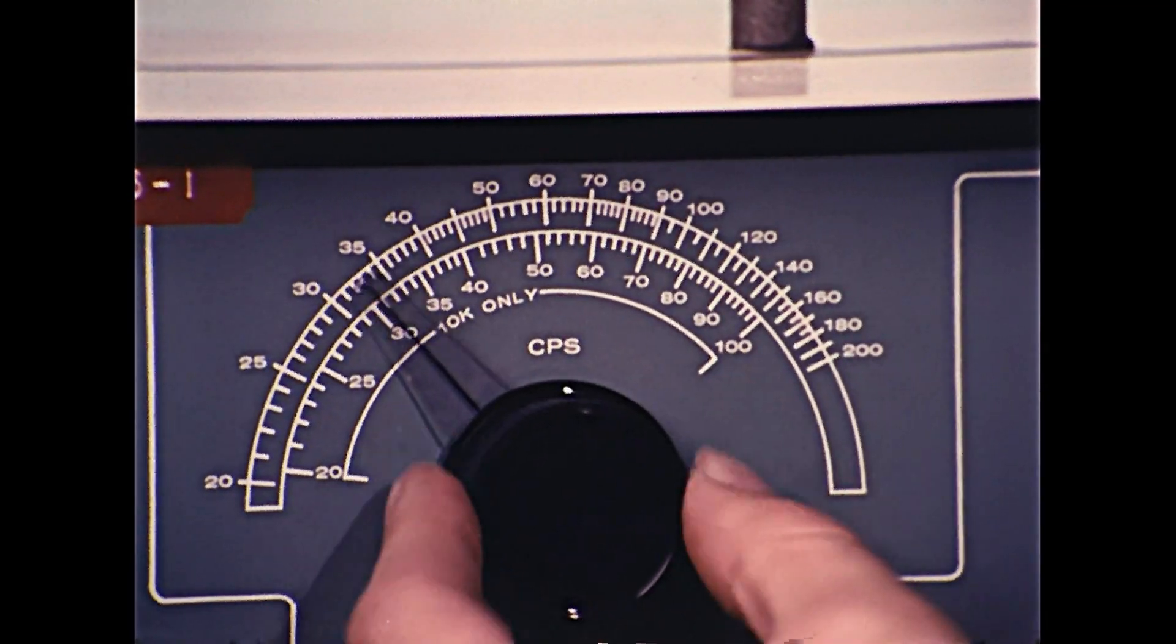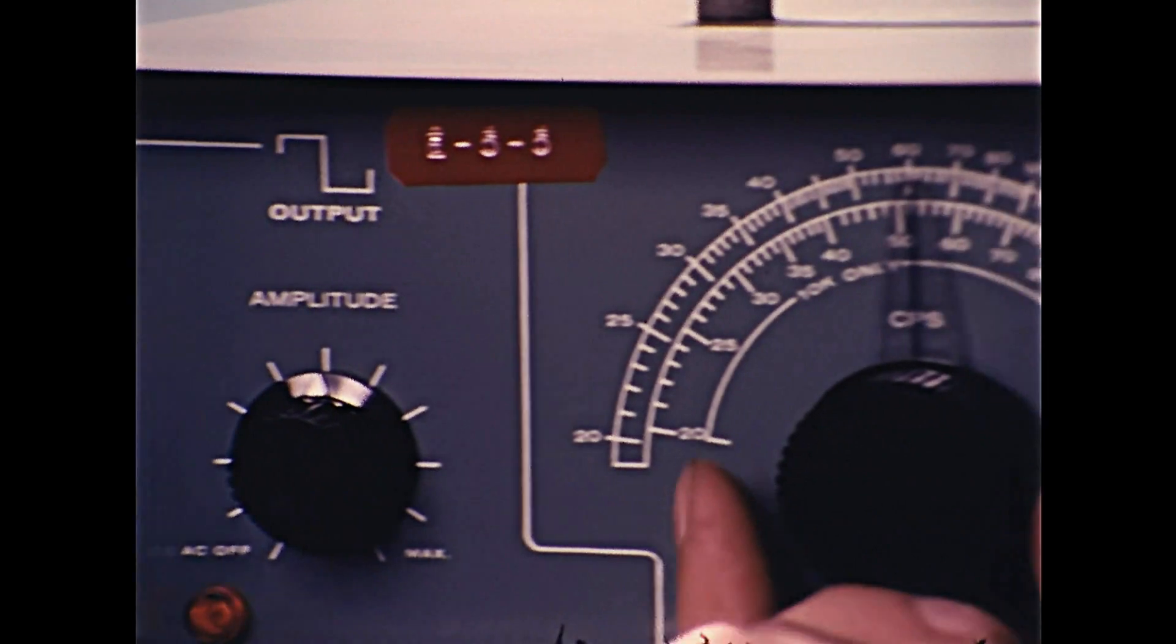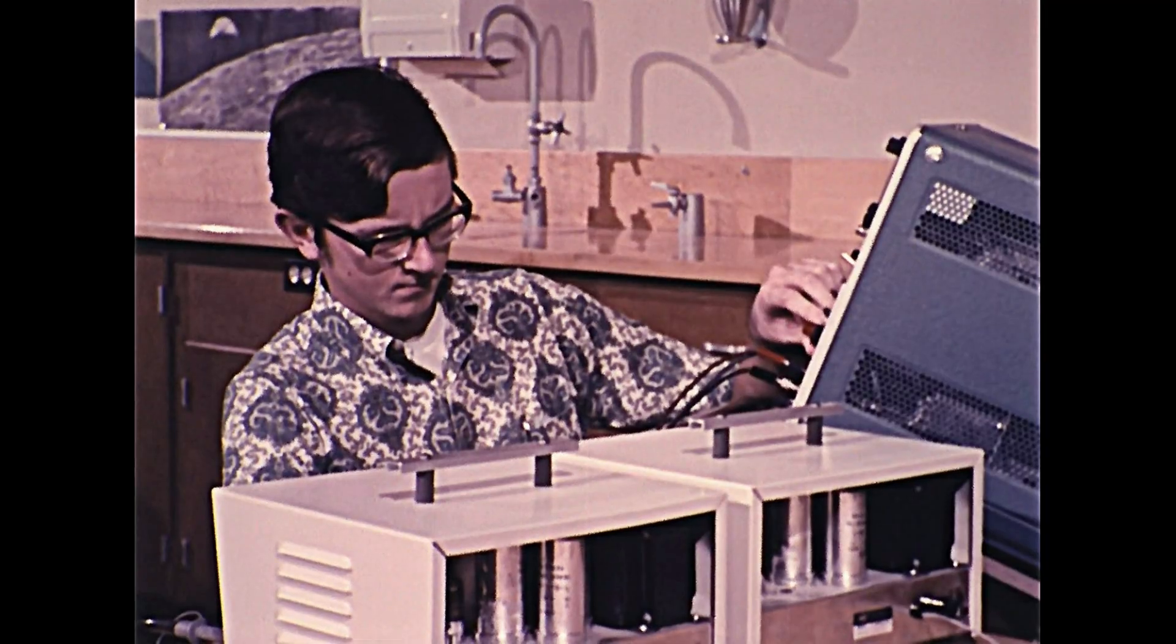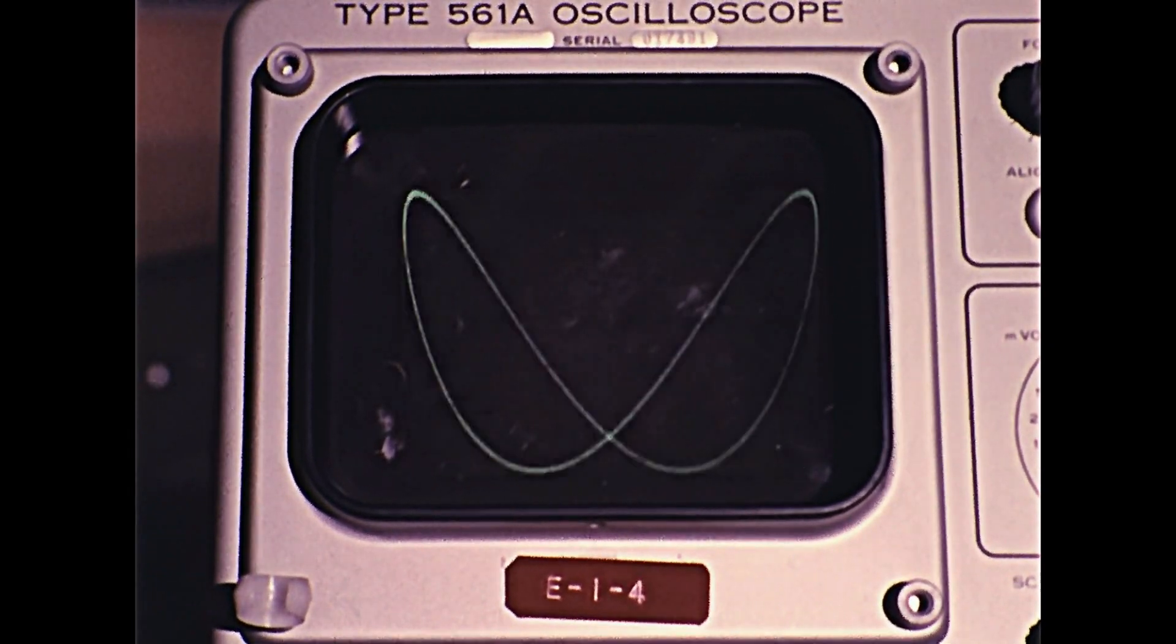By applying sine waves to both the horizontal and vertical inputs, we can graph the relationship of two waves. These patterns are called Lissajous figures.